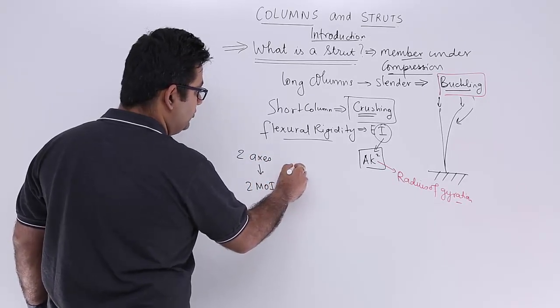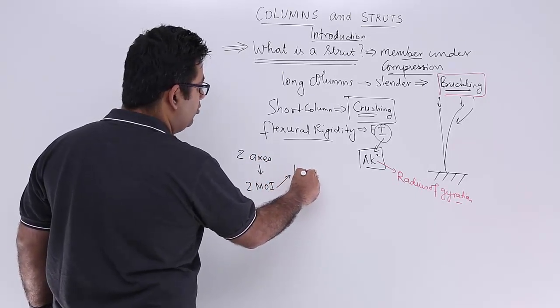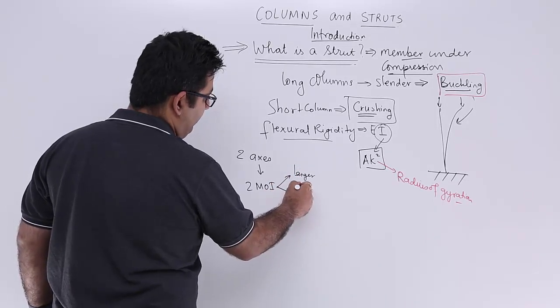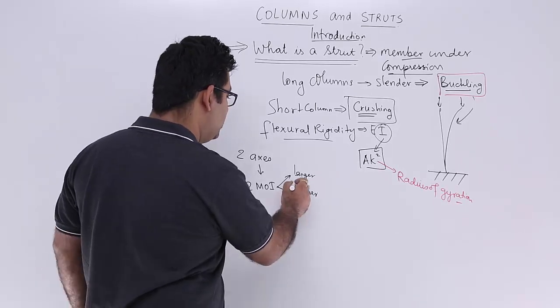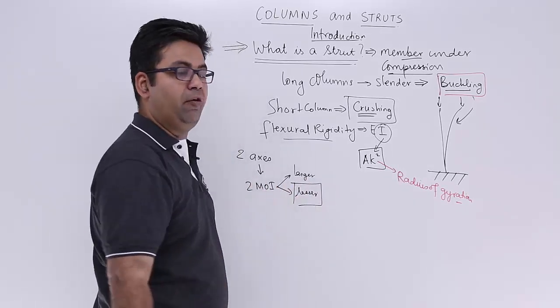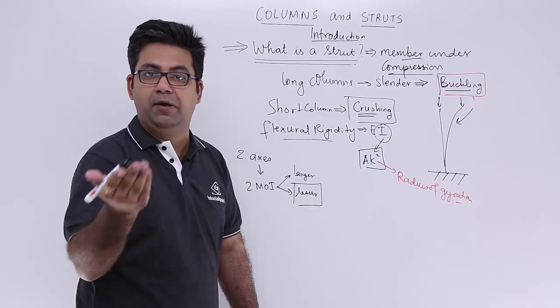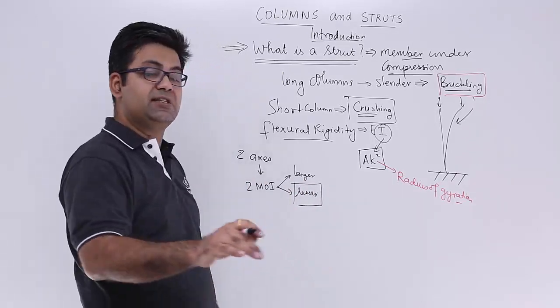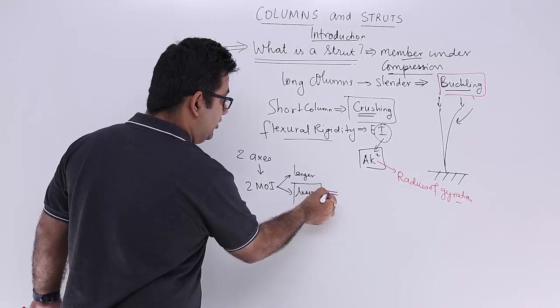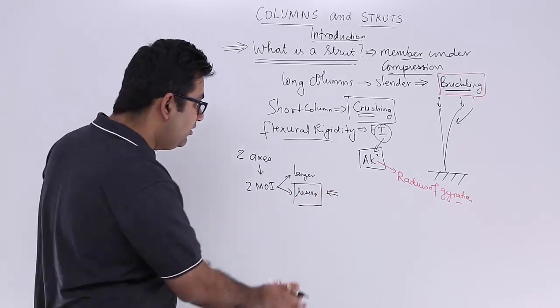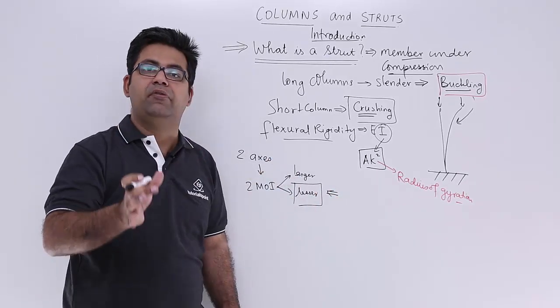You have two axes which give you two moment of inertia. Out of these, one will be larger in value and the other one would be lesser in value. I will choose the lesser of the moment of inertia about a particular axis, and I will design the entire column according to this moment of inertia.